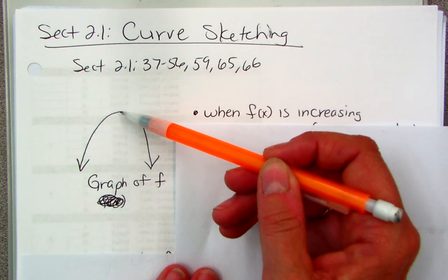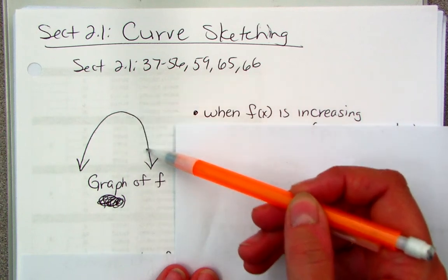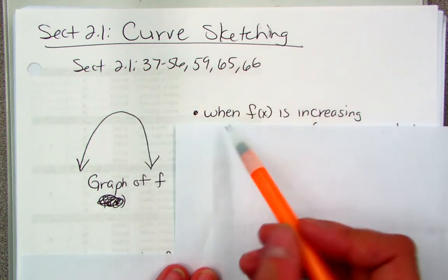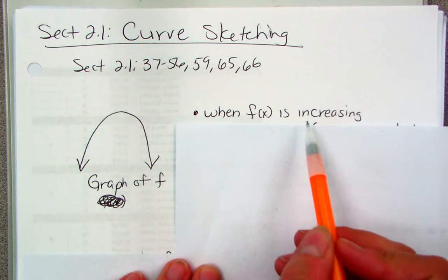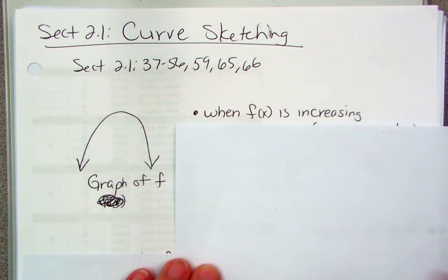Up at the top, remember, it's not increasing or decreasing, but here now my y values are decreasing. So when my y values, or f(x) is increasing, which is over here, what about that?